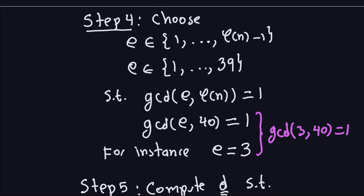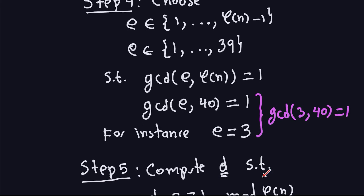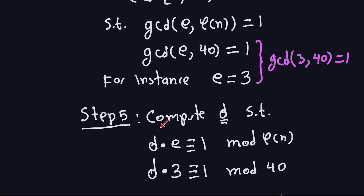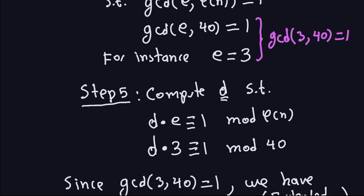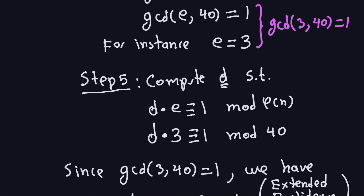The last step requires a bit more thinking. We need to compute the private key D, which is private to Bob. We want D such that d*e ≡ 1 mod φ(N). With E = 3 and φ(N) = 40, we want d*3 ≡ 1 mod 40, or equivalently 40 divides (3d − 1). One way to compute this uses the extended Euclidean algorithm, since gcd(3, 40) = 1.